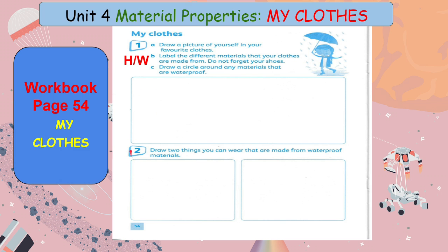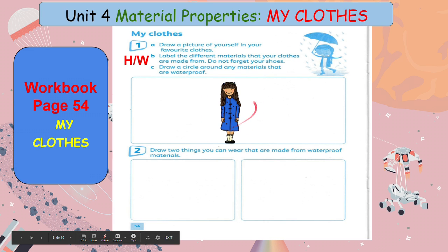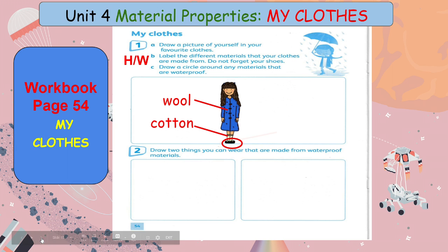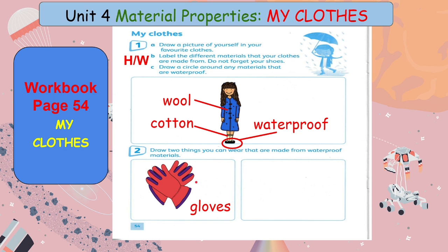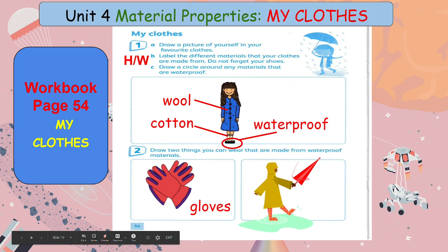For our classwork, number 2: draw 2 things you can wear that are made from waterproof materials. Here, I draw a girl wearing a dress made from wool, and the socks are made from cotton, and this pair of shoes are waterproof. Two examples of things I can wear made from waterproof materials: one is a pair of gloves — these gloves are waterproof or water resistant, and they insulate and protect our hands. Rain jackets, umbrellas, and boots are also made from features and fabric that are waterproof.